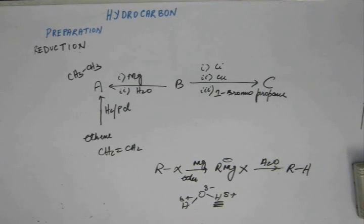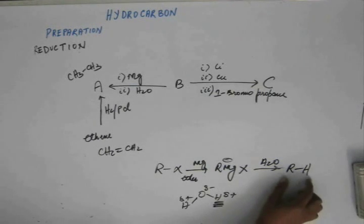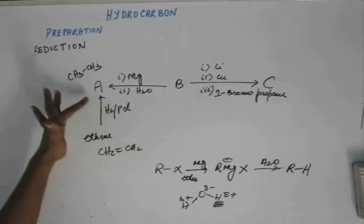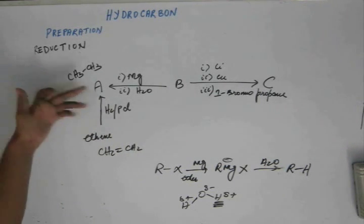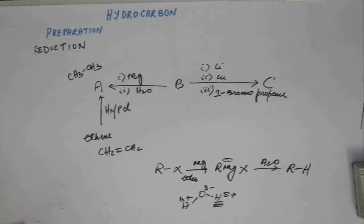So Grignard reagent cannot be stored in open or in presence of moisture. It has to be kept away from moisture. Otherwise, H plus will react with this R minus and will give us R-H. So this reaction is something that might be happening here because the final product is alkane. And you have a Grignard reagent in water. So you have to start guessing. You have to start making your mind intuitively feel what must be happening in the reaction.